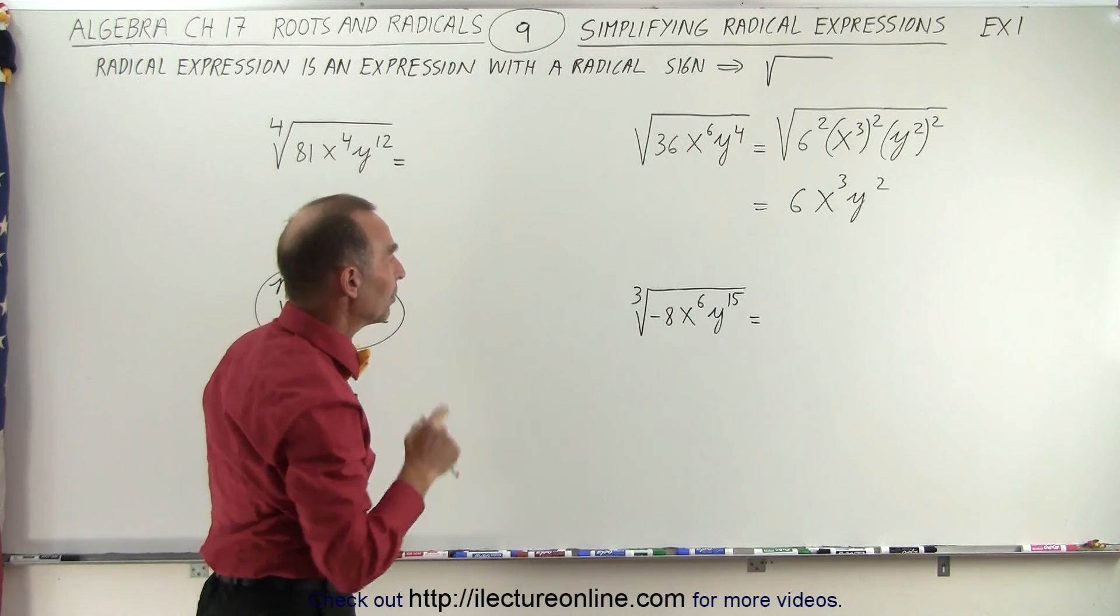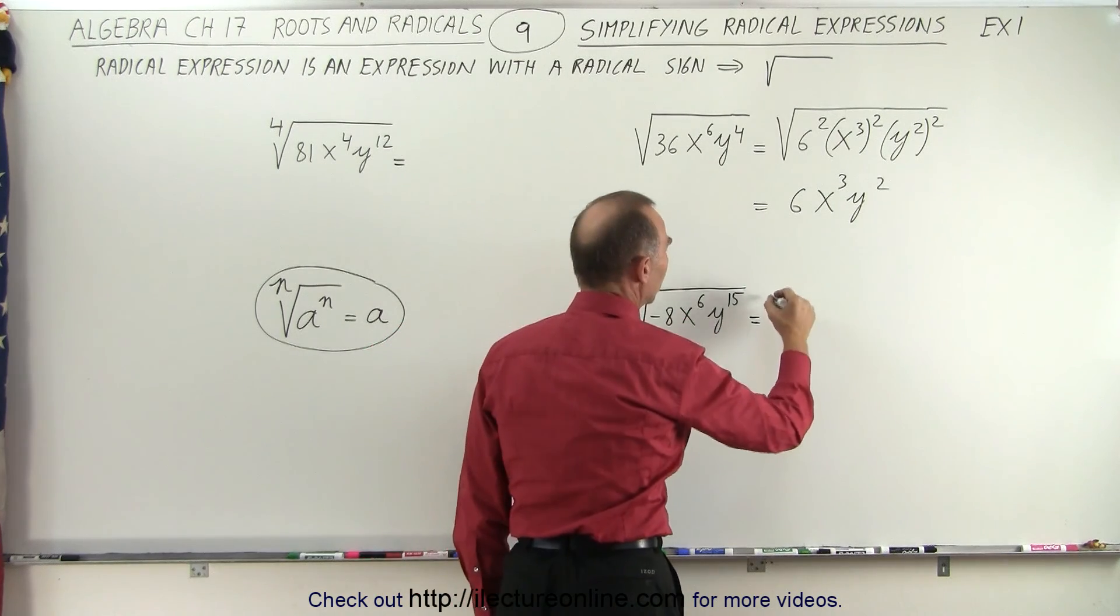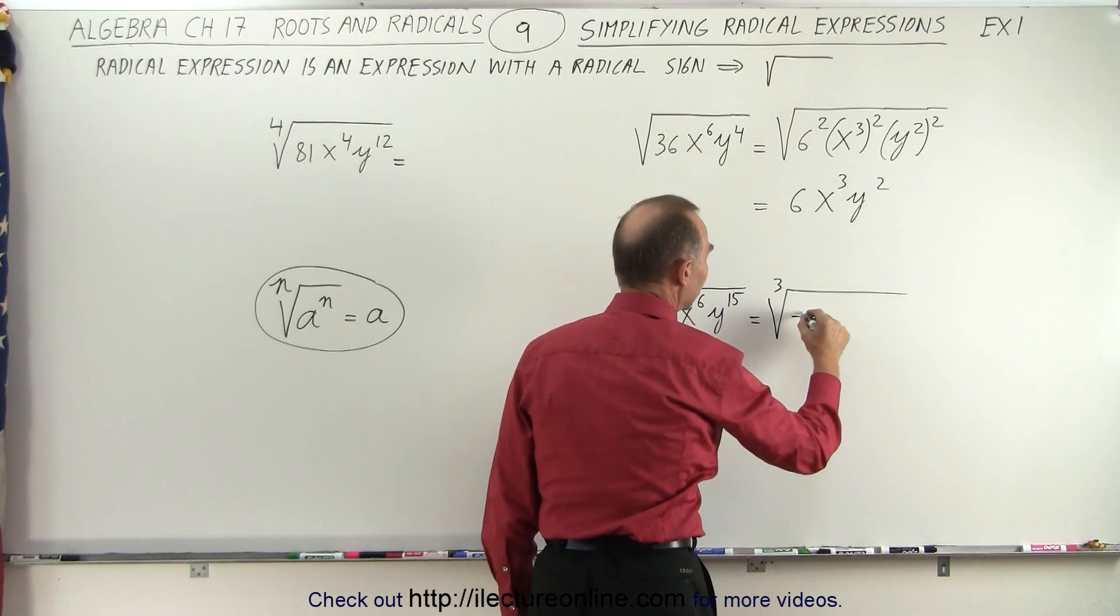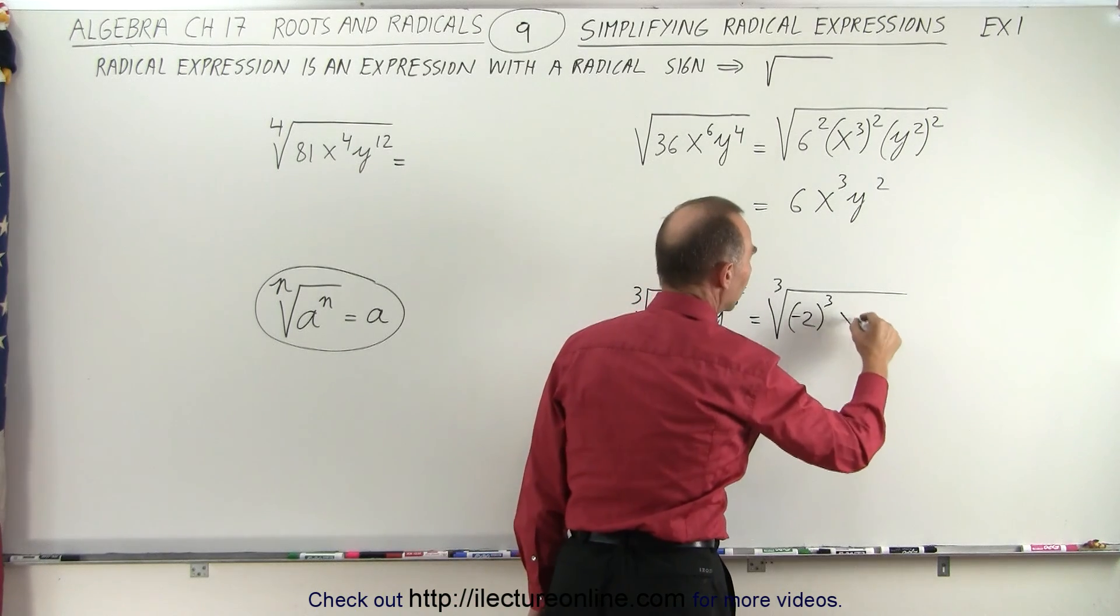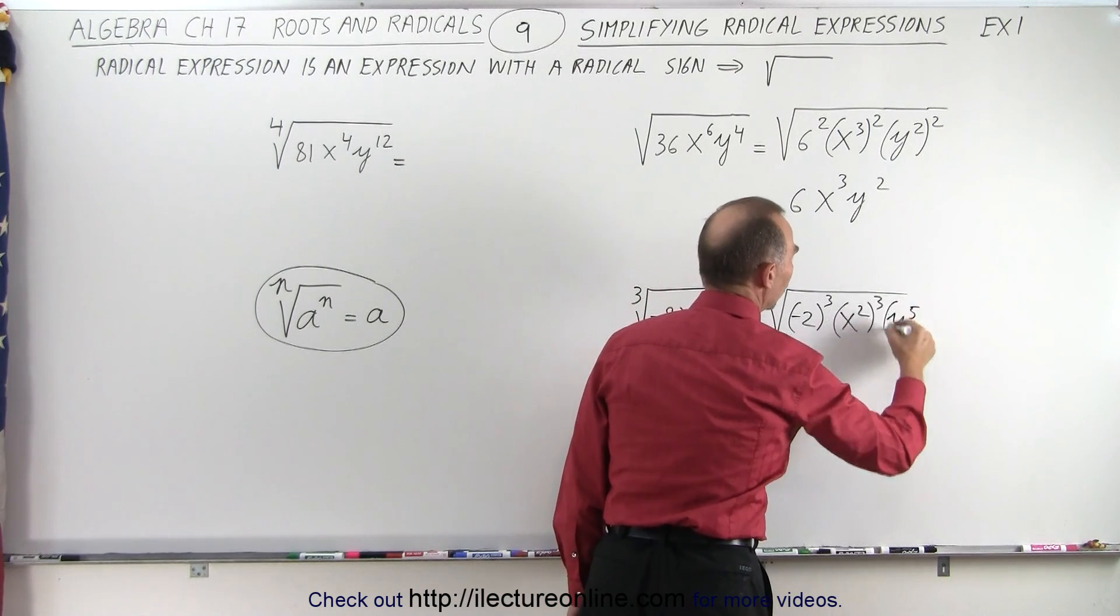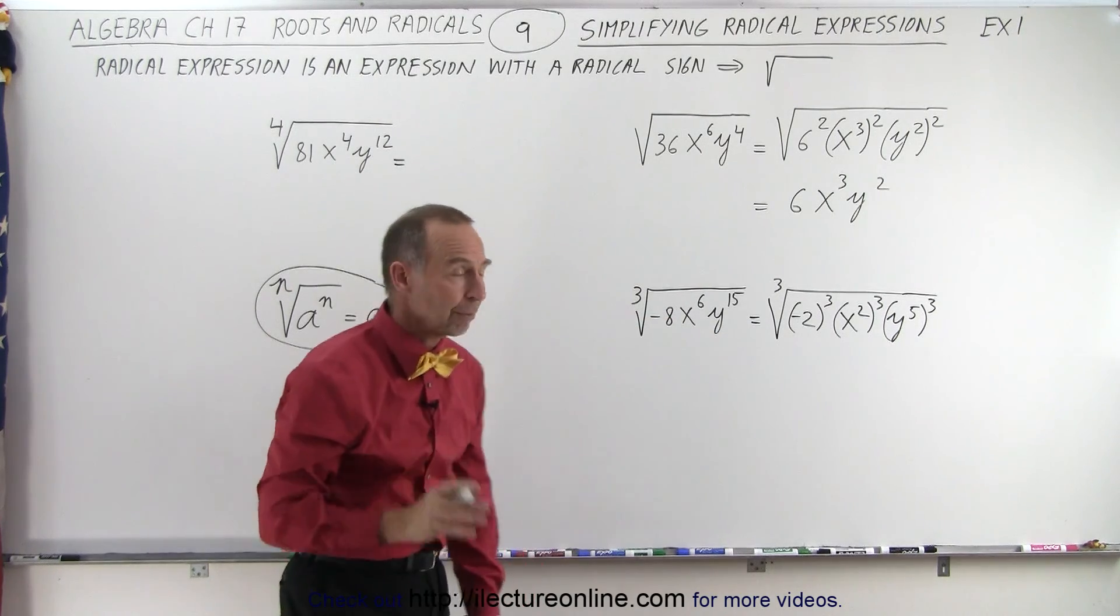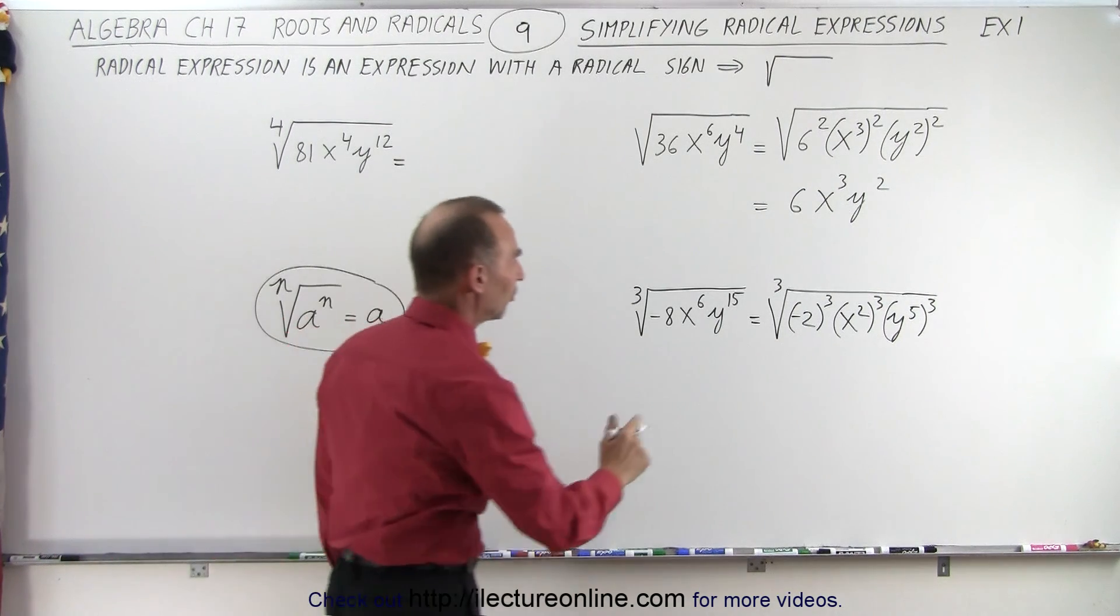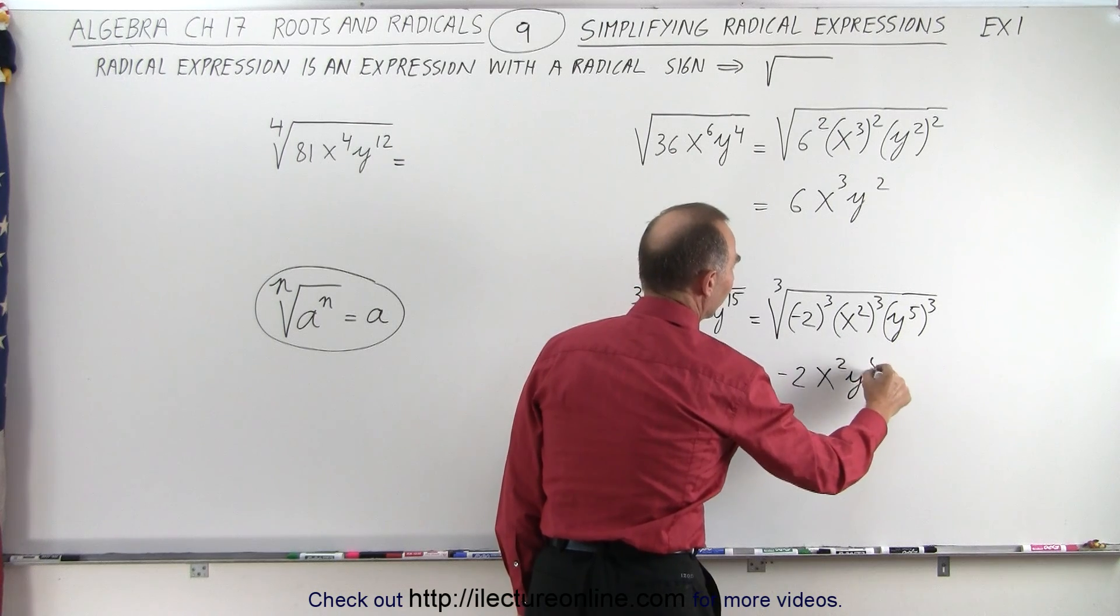We do the same over here, but notice we have the cube root. So, we have to write this in terms of something cubed. So, this can be written as the cube root of negative 8 can be written as negative 2 quantity cubed. Because that equals negative 8. x to the sixth can be written x squared quantity cubed. And this can be written as y to the fifth quantity cubed. And notice, with the exponential rules, we get back the original problem back, or the original expression back. And now, we can apply this rule right here. So, this becomes equal to negative 2 x squared y to the fifth.